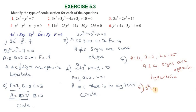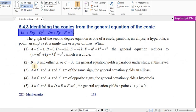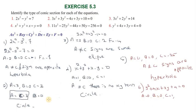The sixth equation is y squared plus 4x plus 3y plus 4 equal to zero. Here a equal to 0, b equal to 0, c equal to 1, d equal to 4, e equal to 3, f equal to 4. Since a equal to zero (either a or c is zero), the general equation represents a parabola. So the sixth equation is a parabola.